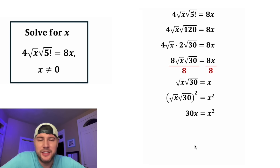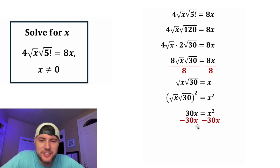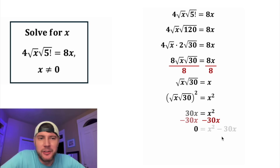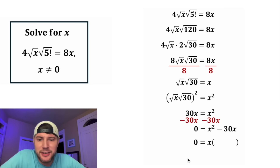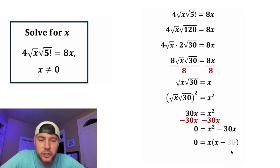Next, we can set this equal to 0. Let's subtract 30x from both sides. On the left-hand side, these cancel each other out, so we have 0. And on the right-hand side, we have x squared minus 30x. Each of these terms contains an x, so let's factor out an x. Then on the inside, x times x gives us x squared, and we subtract x times 30 to give us negative 30x.